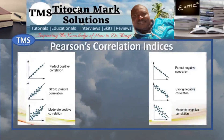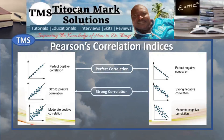Pearson's correlation indices can be perfect correlation, in which case all the points showing the relationship between the variables fall exactly along the fitted line; or strong correlation, in which case all the points are relatively along the fitted line; or moderate correlation, in which case the points are scattered around the fitted line.